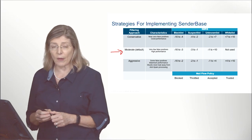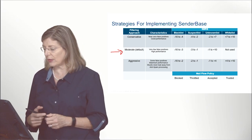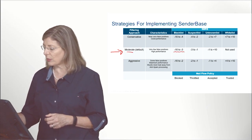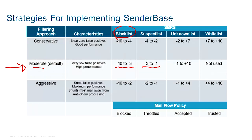How will the ESA react to the SBRS score? By default, a score of minus 10 to minus 3 puts you on the blacklist. Minus 2 to minus 1 puts you on the suspect list — we accept the incoming TCP session but apply mail flow policies to control it. Unknown means you're not known to be a spammer but we still accept the mail flow policy and process it through antivirus and anti-spyware. Blocking means we block the connection; throttle means we accept the TCP request but limit it to no more than 100 emails per hour from that sender.